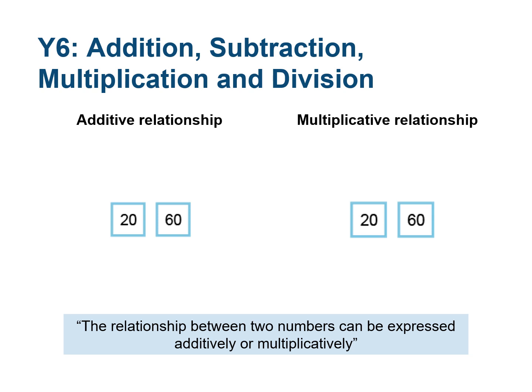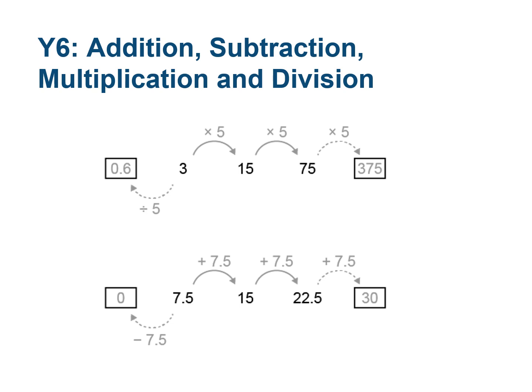Throughout Key Stage 2, pupils have learnt about and used two types of mathematical relationship between numbers: additive relationships and multiplicative relationships. In Year 6, pupils should learn to identify the additive relationship or the multiplicative relationship between two numbers. The multiplicative relationship should be restricted to integer multipliers in Year 6, but this will prepare pupils for scaling numbers by fractions in Key Stage 3. When given a sequence of numbers, pupils should be able to identify whether the terms are related additively or multiplicatively, identify the specific difference or multiplier, and use this to continue a sequence either forwards or backwards.